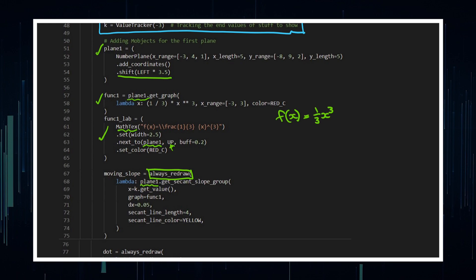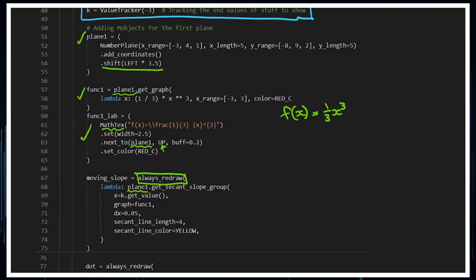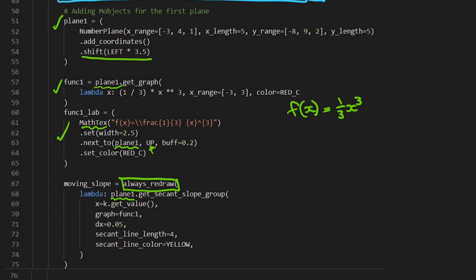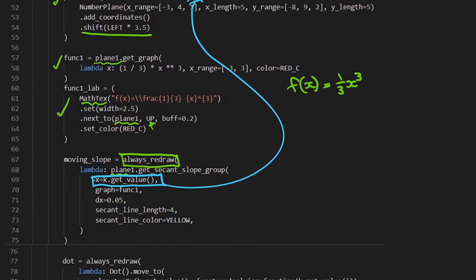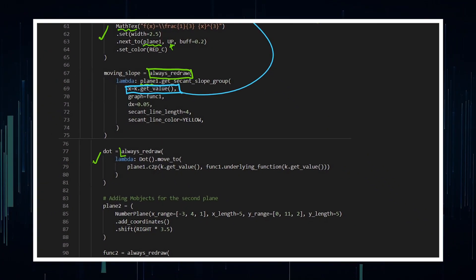So this is always updated or always redraw. Put the slope on plane one, and this is a built-in function, get secant slope group, where this is accessing the value tracker. So the X value that this secant is going to be tracking is the value tracker mentioned above. And I want the DX to be 0.05, so it looks like there is not much of a difference between the two points of the secant, giving it that look of a tangent value.